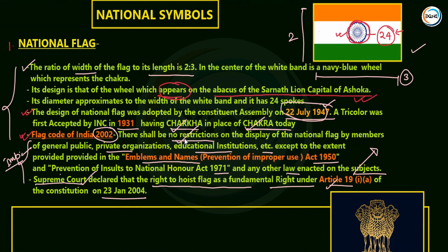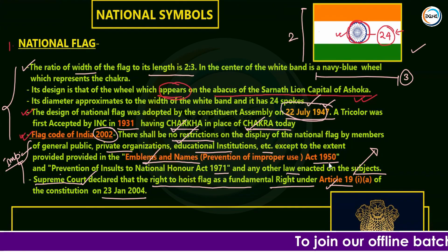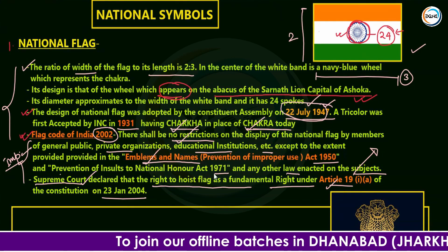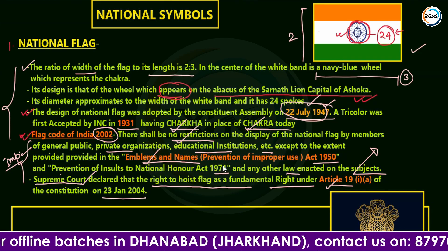So, regarding the national flag, keep in mind: it was adopted by the Constituent Assembly on 22nd July 1947; standard dimensions are 2:3 width-to-length ratio; the Flag Code of India 2002 provides there shall be no restriction subject to two acts — the Emblems and Names Act 1950 and the Prevention of Insults to National Honour Act 1971. Now let's move to the next topic — State Emblem.